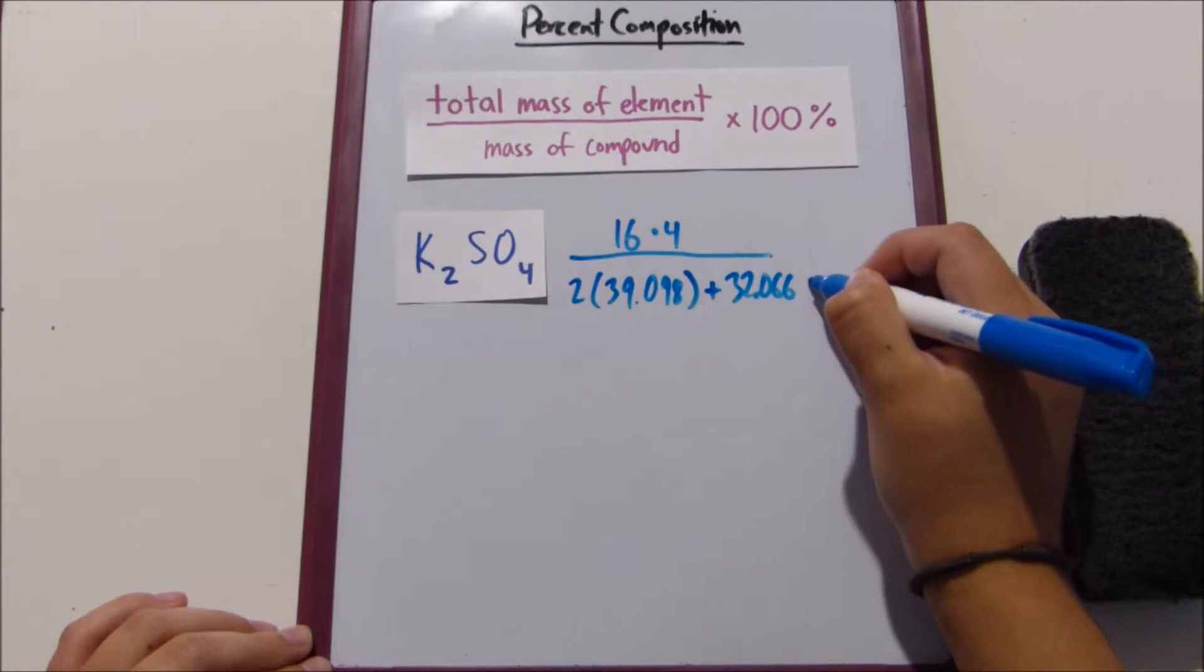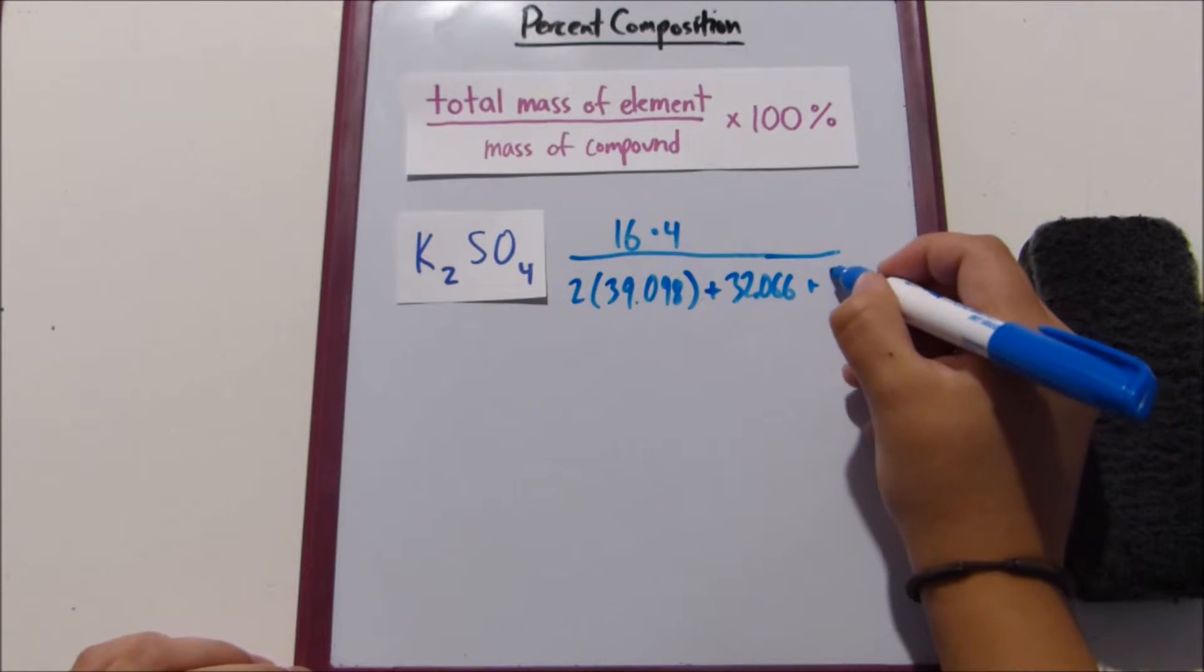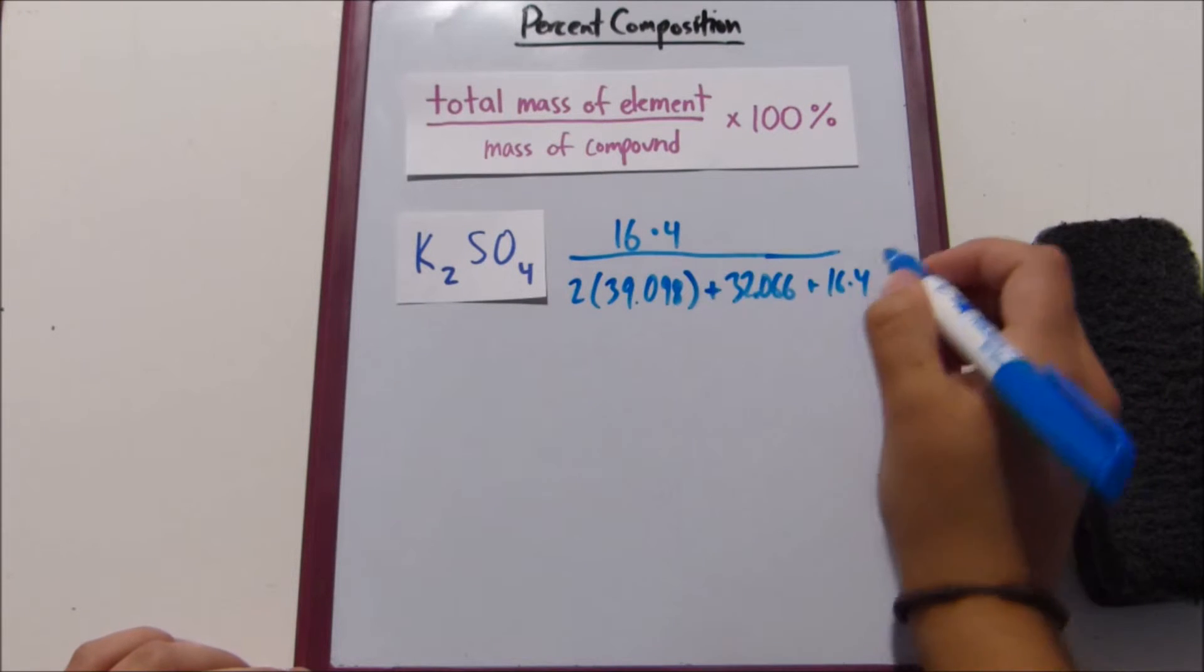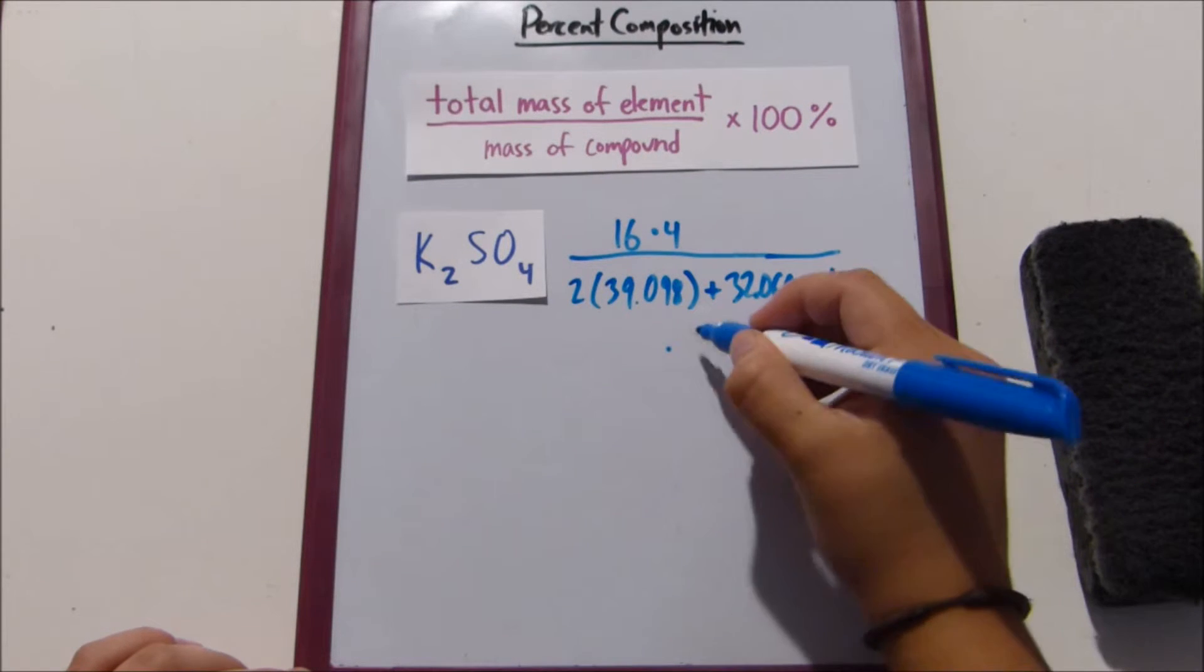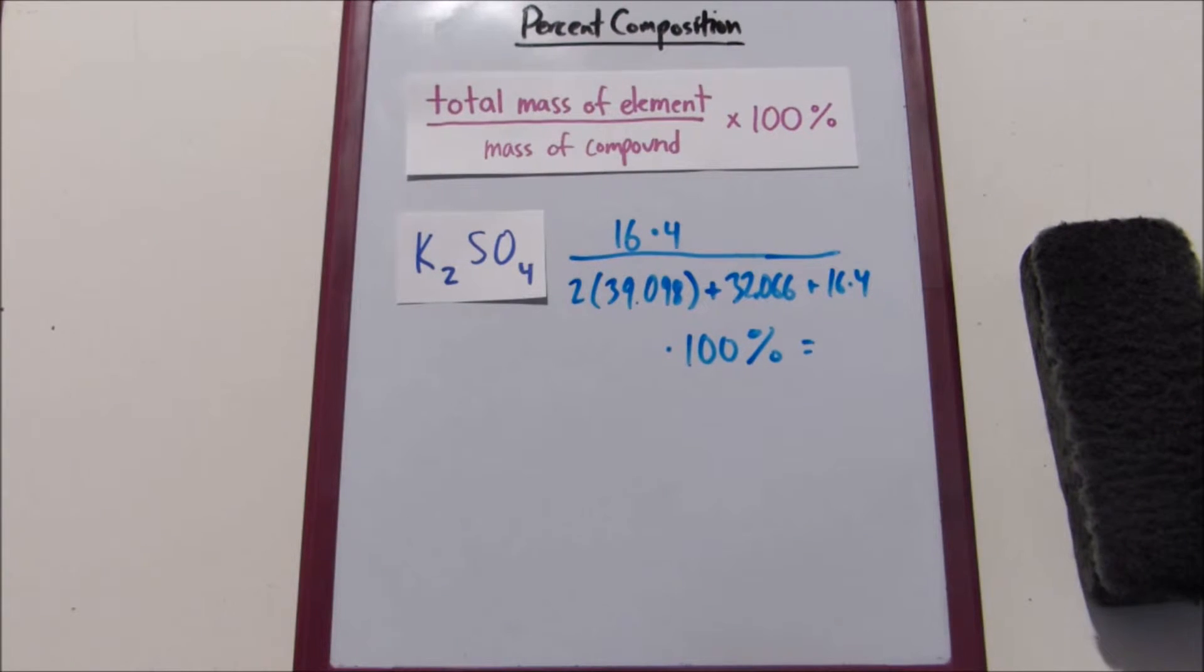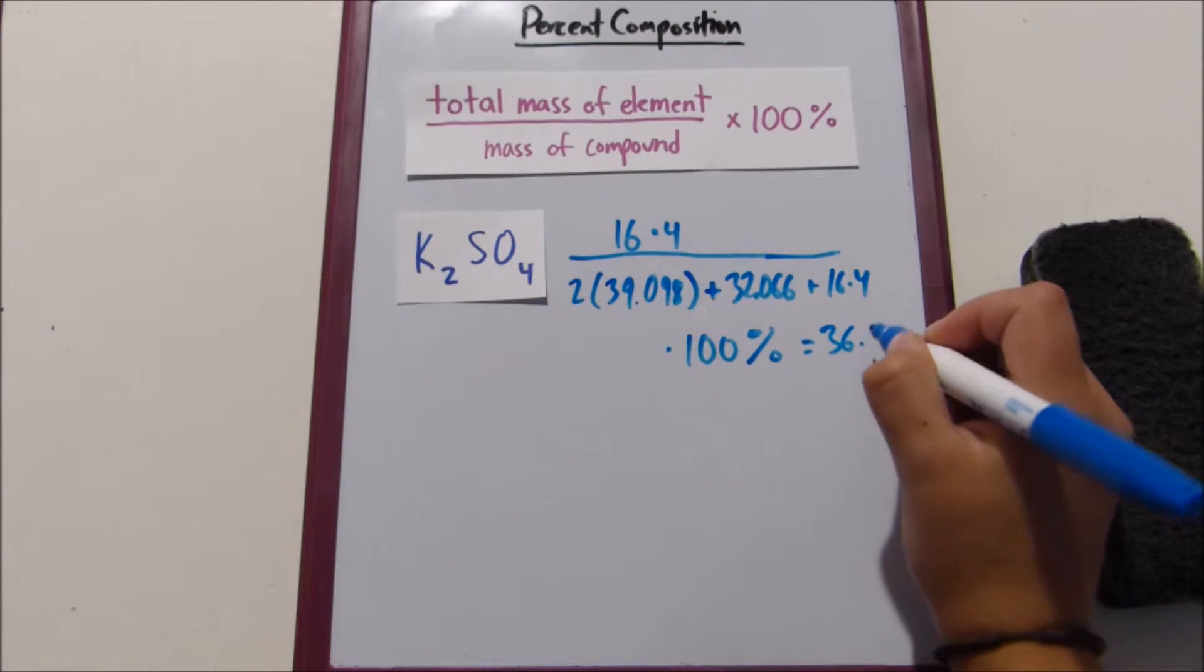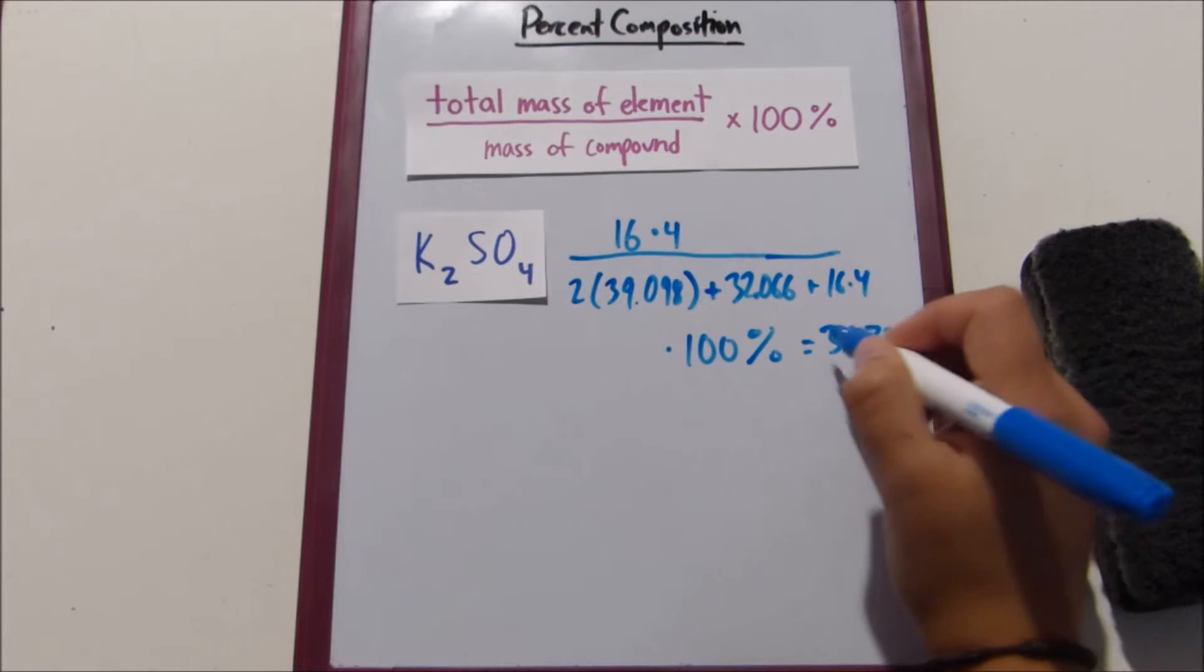And then we add on the mass of our oxygen, which is the same thing as the numerator. And then we take that and we multiply it by 100%. So that's going to end up being about 36.726%.